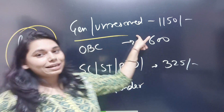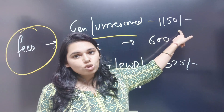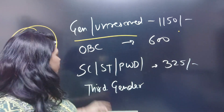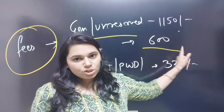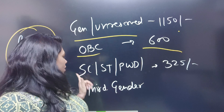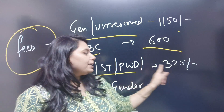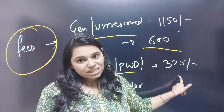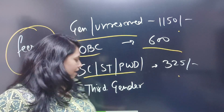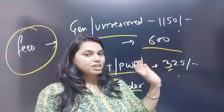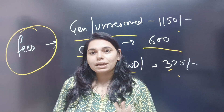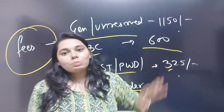Regarding application fees: for General and Unreserved category it is Rs. 1150, for OBC category it is Rs. 600, for SC/ST/PwD category it is Rs. 325, and for the Third Gender category it is Rs. 350.